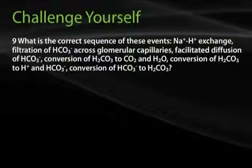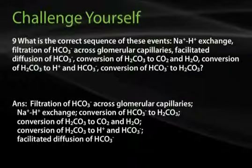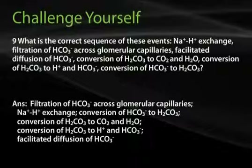Question 9: What is the correct sequence of these events — sodium-hydrogen exchange, filtration of bicarbonate across glomerular capillaries, facilitated diffusion of bicarbonate, conversion of carbonic acid to carbon dioxide and water, conversion of carbonic acid to hydrogen and bicarbonate, and conversion of bicarbonate to carbonic acid? The correct sequence is: (1) filtration of bicarbonate across glomerular capillaries, (2) sodium-hydrogen exchange, (3) conversion of bicarbonate to carbonic acid (facilitated by carbonic anhydrase), (4) conversion of carbonic acid to carbon dioxide and water, (5) CO2 and water diffuse into the cell and re-form carbonic acid, which dissociates into hydrogen and bicarbonate, and (6) facilitated diffusion of bicarbonate.